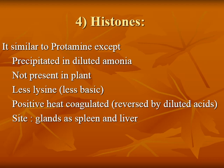Histones are similar to protamines, except they are precipitated in diluted ammonia, not present in plants, contain less lysine, and are less basic. Both show negative heat coagulation. Histones are present in glands such as the spleen and liver.